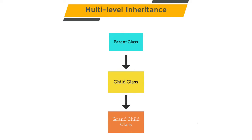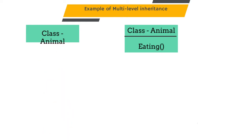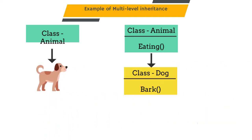In this type, parent class properties can be used by the child class as well as the grandchild class. For example, consider a parent class called Animal having a function called eating. We have created one child class called Dogs which will inherit the Animal class. In the Dog class, we have a function called bark. Now, child class can access the function of the parent class.